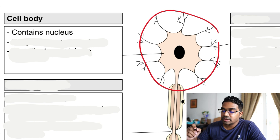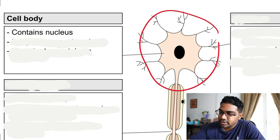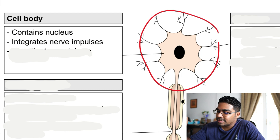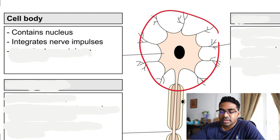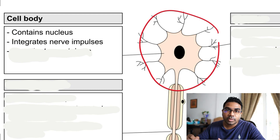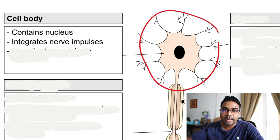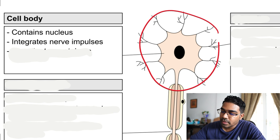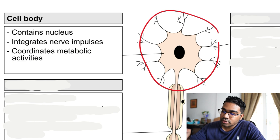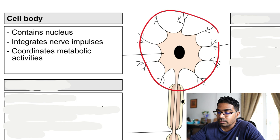Since the cell body contains the nucleus, it is responsible for integrating nerve impulses. The cell body is also where most of the organelles lie, and therefore it is also responsible for coordinating metabolic activities.